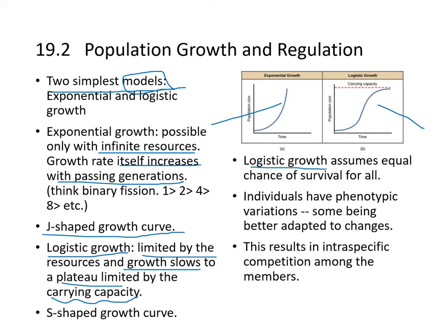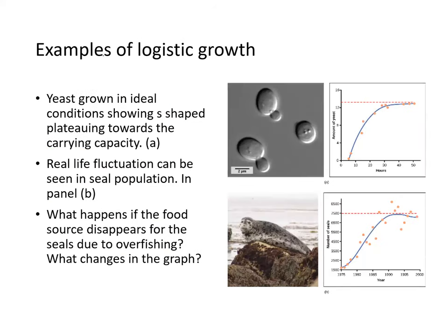Logistic growth assumes equal chance of survival for all individuals, but individuals have phenotypic variations and will be better adapted to future changes, resulting in intraspecific competition. An example of logistic growth is yeast grown in ideal conditions, showing an S-shaped plateau toward the carrying capacity. Real-life fluctuations can be seen in seal populations, which are noisier but follow the general trend.